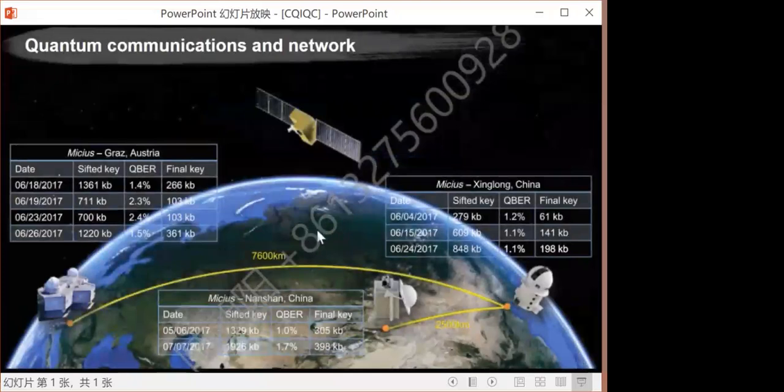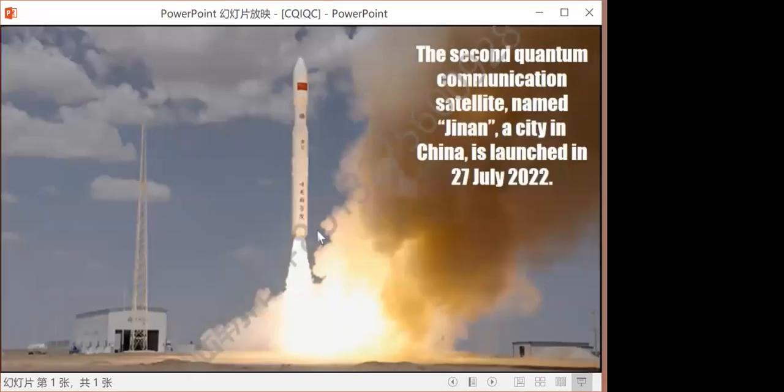Actually, in July, we have now launched the second nanosatellite for quantum communications, with a weight of 23 kilograms, that will be a few hundred times more efficient in generating the secure key.